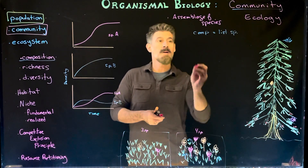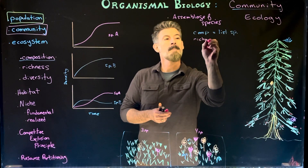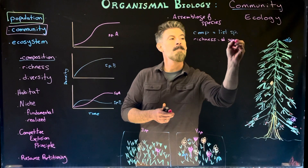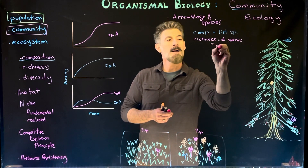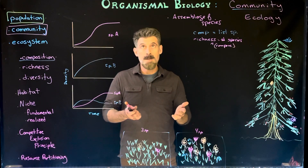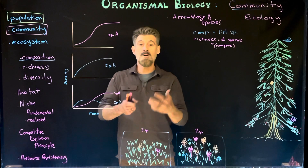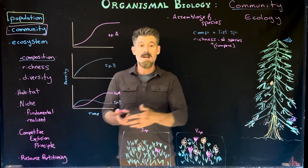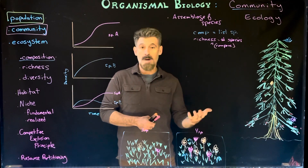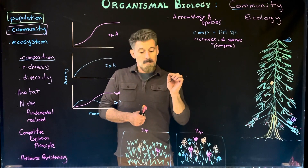When we compare the numbers of species, we call that richness — it's just the total number of species. We might say one environment has a greater species richness than another habitat, and we'd study why that might be.